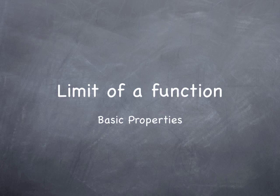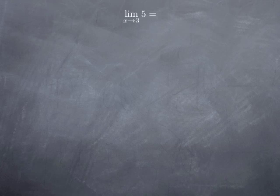Now that we have a definition for limit, we're going to go through the basic properties. Let's start with something very basic: consider the constant function 5. That means a function that takes a value 5 at each x. Whether x is approaching 3 or not doesn't matter — the values are always 5, and they can be made as close to 5 as we want. Therefore, the limit is 5.